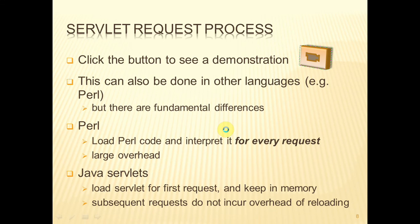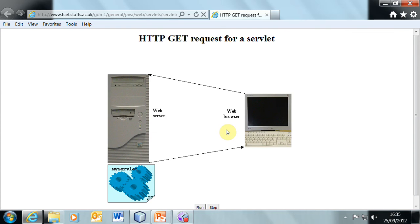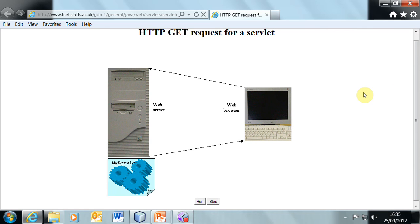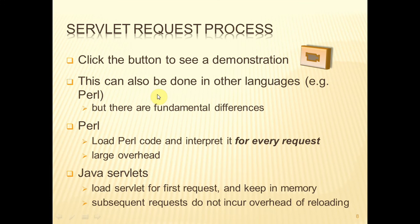By clicking here we should get to see a demonstration of this process. This is an applet, which is another kind of Java program that runs in the context of a web page. So this is demonstrating a GET request — there are two kinds of requests, I'll talk more about those in a minute. Here we have the web browser, the web server, and the servlet that is associated with that web server — those are the three major components. The browser sends an HTTP GET request to the server; the server locates the servlet which generates the HTML dynamically and sends it back to the browser, and the browser displays it. This HTTP round trip is not unique to Java systems — you could do that kind of thing in any language that allows you to send HTTP requests to servers, for example Perl.